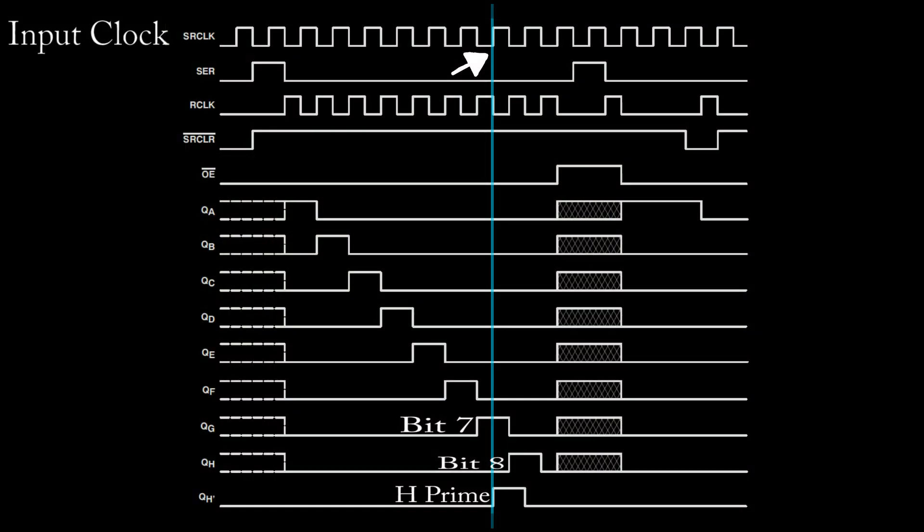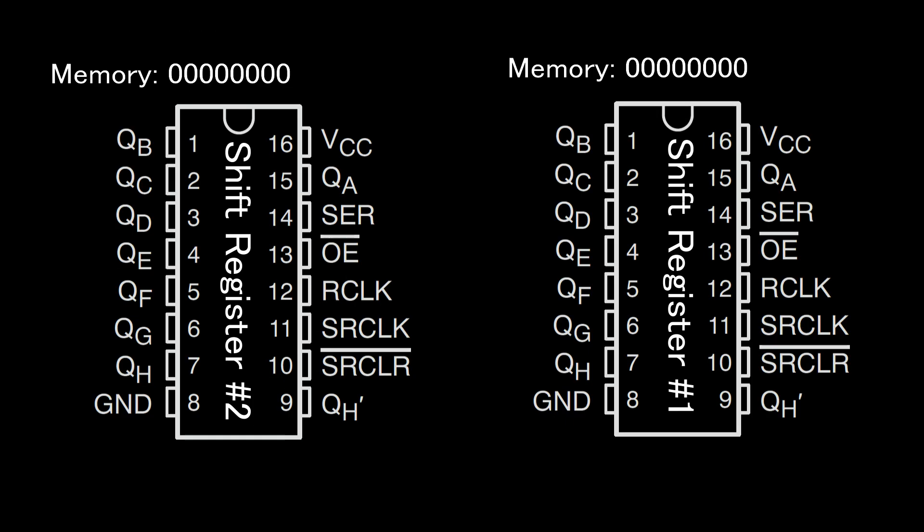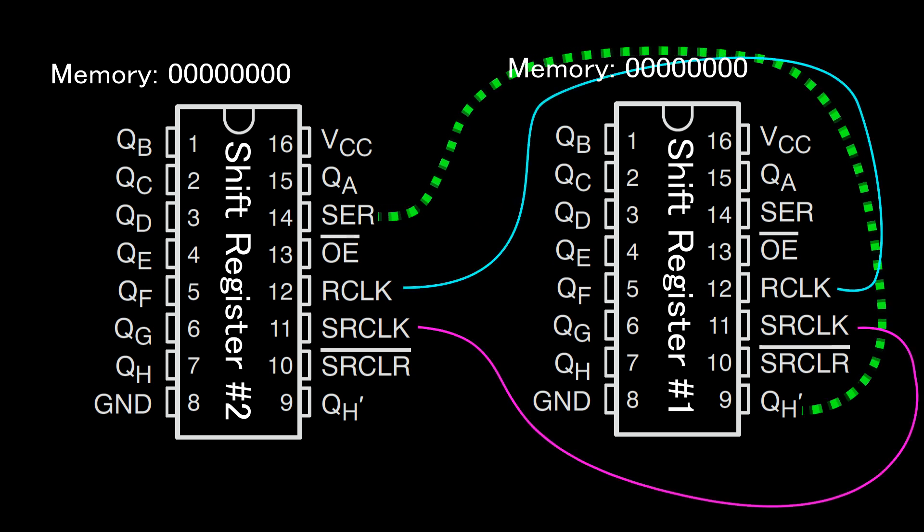It goes high on the rising edge of the input clock signal when a 1 is shifted into bit 7 of the internal memory and goes low on the rising edge of the input clock when that bit is shifted into bit 8. The same thing happens for a logic zero, except the H' output goes low instead of high. When the H' pin on the first shift register is connected to the data line on the second and the output clock and the input clocks on the first are connected to those on the second, the two shift registers act exactly as one would except there are eight more outputs.